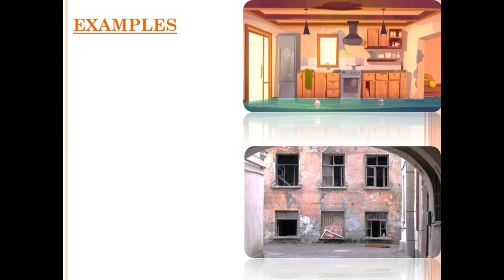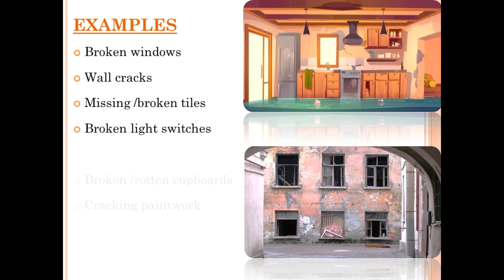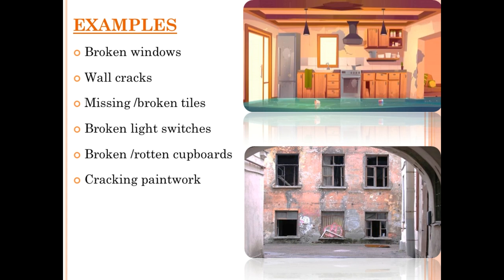Examples of patent defects include: broken windows or cracks, missing or broken tiles, broken light switches, broken or rotten cupboards, cracking paintwork, burn marks on carpets, and bent walls.